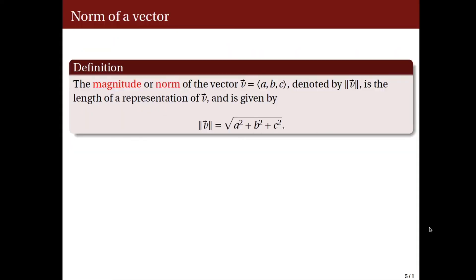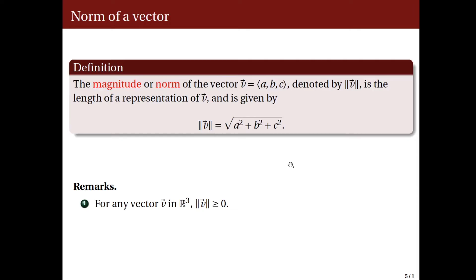As we said earlier, a vector has a magnitude and direction. Let us talk about the magnitude of a vector. The magnitude, or sometimes called norm, of a vector with components a, b, and c is defined as the length of any representation of the vector v, and it is given by the formula square root of a squared plus b squared plus c squared — or in other words, the square root of the sum of the squares of the components. Take note that for any vector v in the three-dimensional space, the norm is always greater than or equal to 0. In particular, the norm of a vector v equals 0 if and only if it is the zero vector.